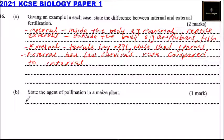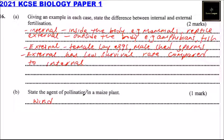We have: state the agent of pollination in maize. The agent of pollination in maize is wind, and you get one mark. In total you get three marks.